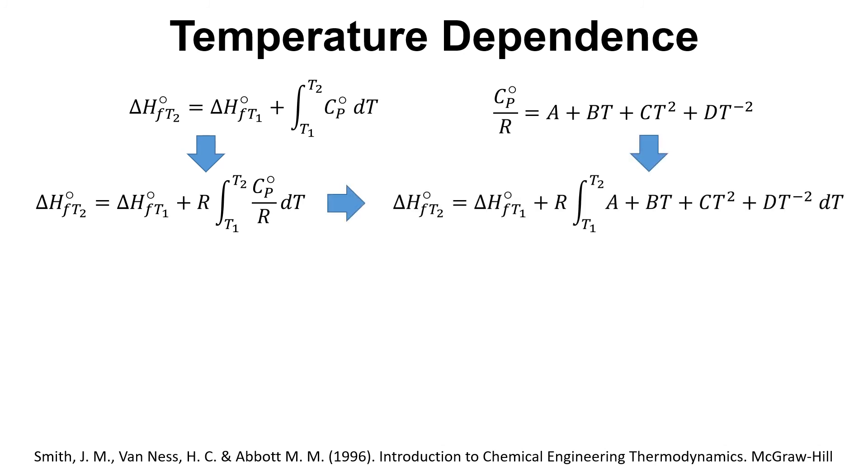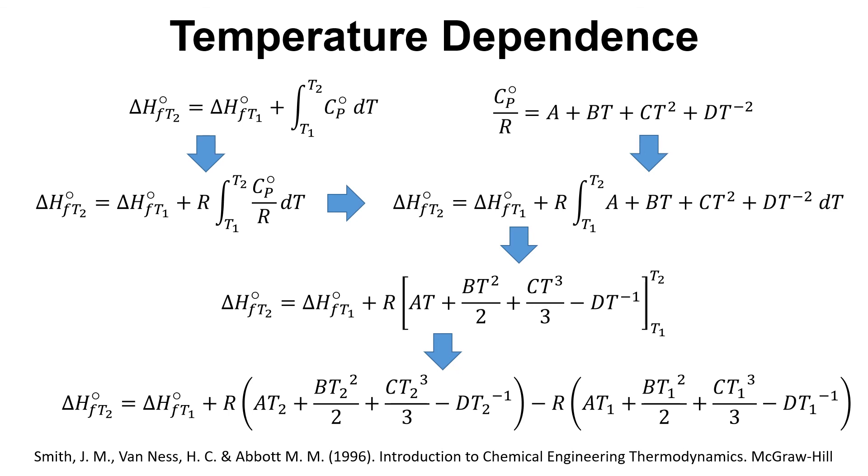Complete the integration, so there's the first step, there's the second step where we put everything in. So this equation now gives us the temperature dependence for the enthalpy of formation. We just need to know the coefficients A, B, C, and D for the particular substance that we're interested in, and we also need to know the delta H of formation at temperature one.